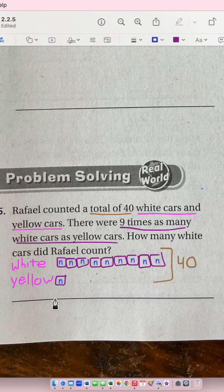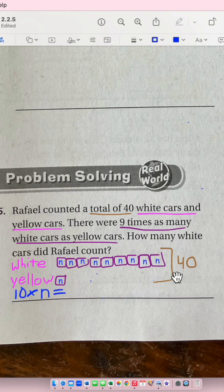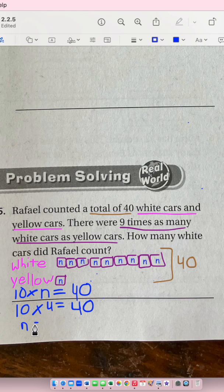I've written an n in all the boxes. I have 1, 2, 3, 4, 5, 6, 7, 8, 9, 10 n's. 10 times n equals my total, which is 40. 10 times 4 equals 40, therefore each n equals 4.